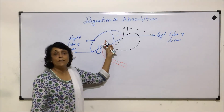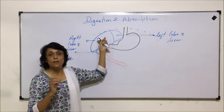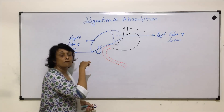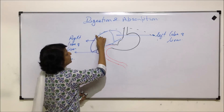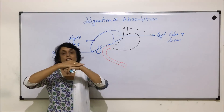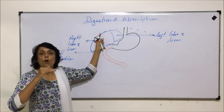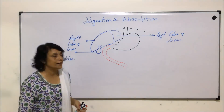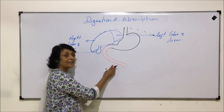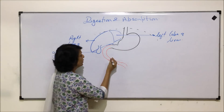The liver is a large gland placed on the right-hand side just below the diaphragm. The upper convex surface of the liver fits into the concave part of the diaphragm, and it is also connected to the inner side of the diaphragm with the help of the peritoneum. The pancreas is present in the space between the stomach and the duodenum.